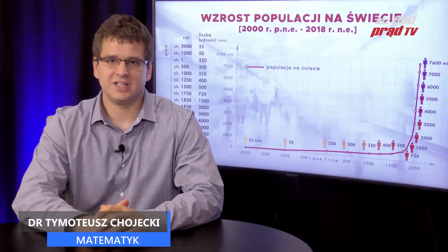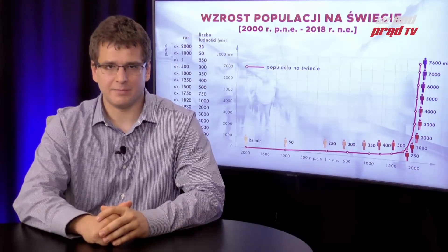Obserwując wzrost populacji ludzi na Ziemi, widać, że rośnie ona w bardzo szybkim tempie. Wielu ludzi stara się przewidzieć, jaki będzie ten wzrost w przyszłości i jakie może tu przynieść konsekwencje. Z drugiej jednak strony niewielu ludzi zastanawia się, co ten szybki wzrost mówi nam o wielkości populacji w przeszłości.